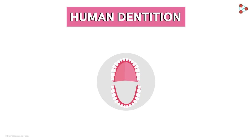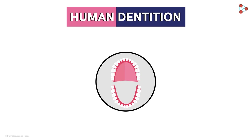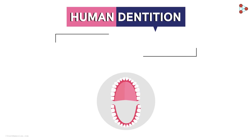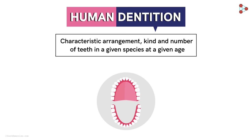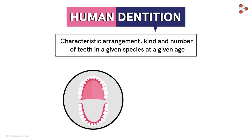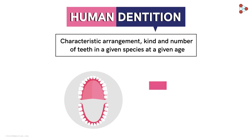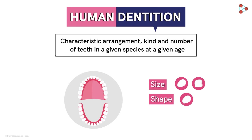So what we have been studying so far is dentition? Somewhat yes — we have studied a few concepts related to teeth and now we will learn a few more. Technically, dentition is the characteristic arrangement, kind and number of teeth in a given species at a given age. That means in a particular species, how the teeth are arranged, what are the characteristic features of those teeth like size and shape, and also how many teeth in total are present.